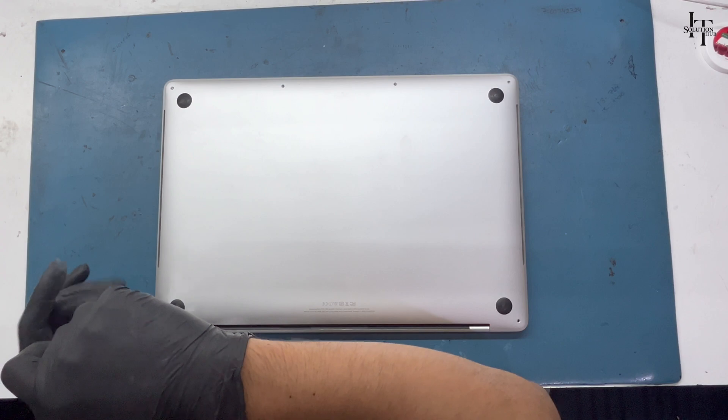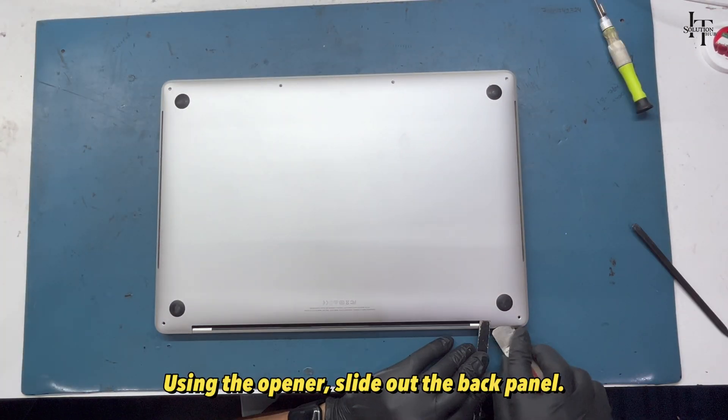Unscrew all the screws on the back panel. Using the opener, slide out the back panel.